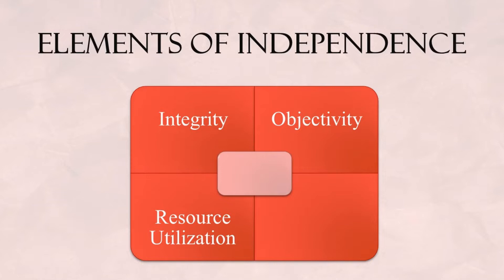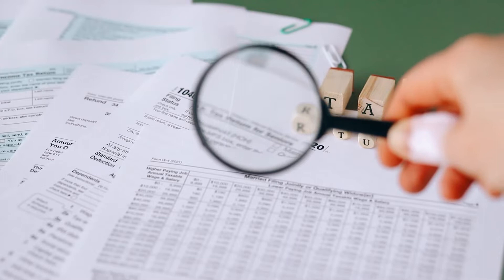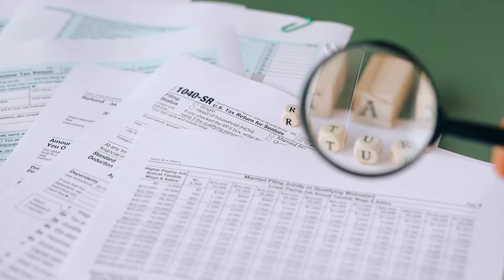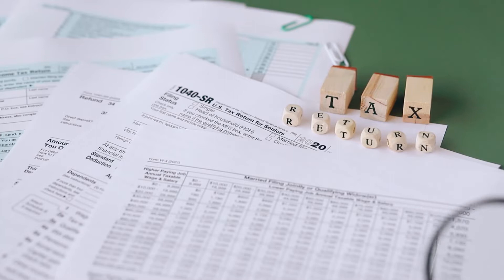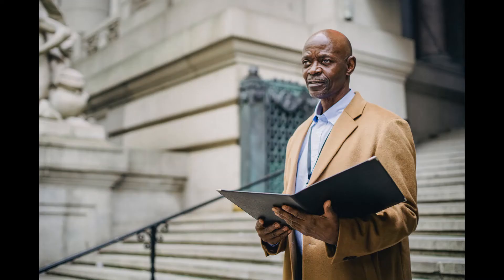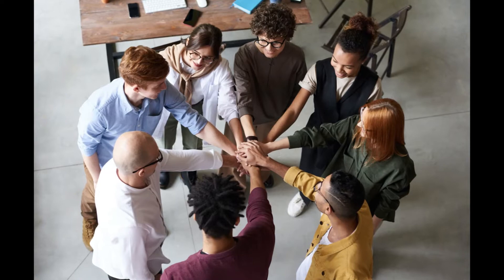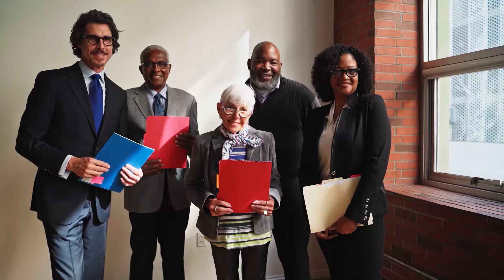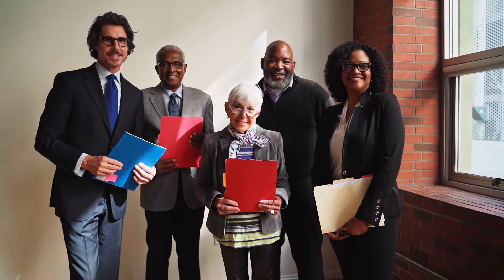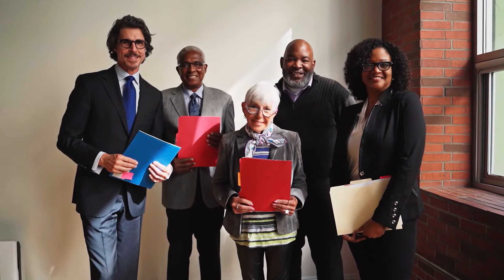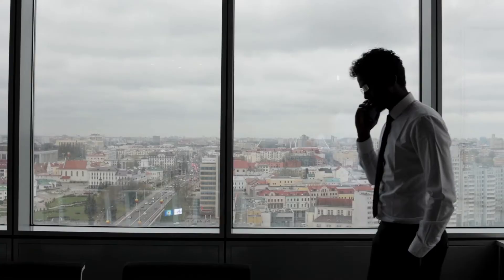We will cover objectivity in detail in the next lesson. Third is resource utilization: handle sensitive and confidential information for the organization's benefit and not for personal gain. For example, if you work in the finance department and you see that the company is about to file for bankruptcy, it would be unethical to release that information to the press or media in advance of the company's official announcement, or to share that news with outsiders such as your family.